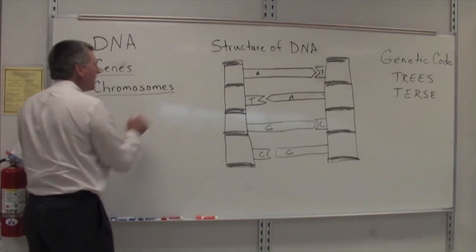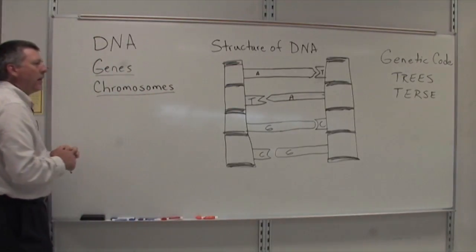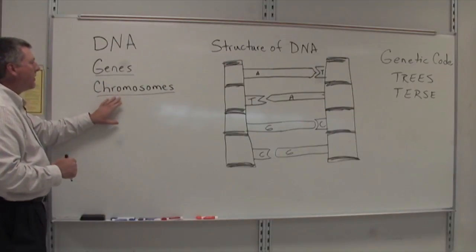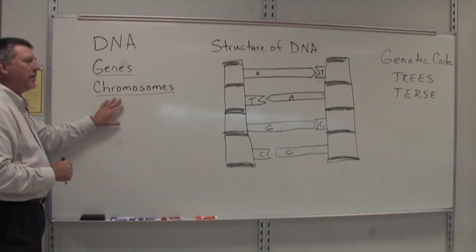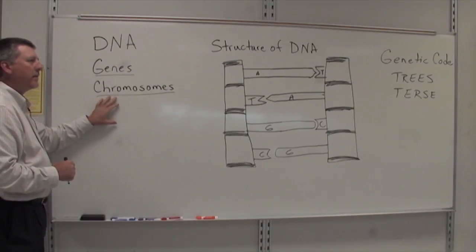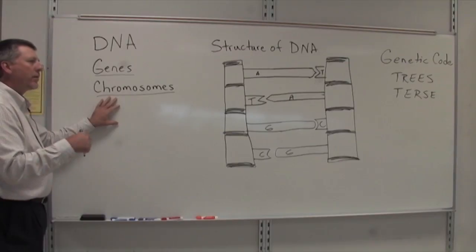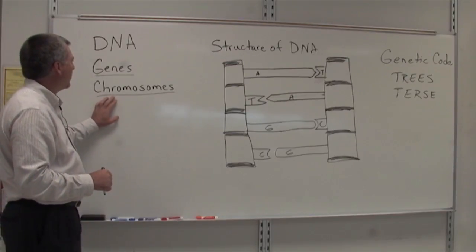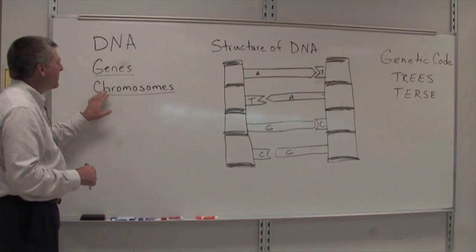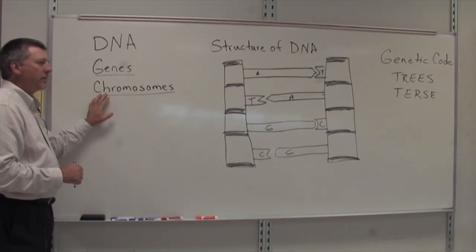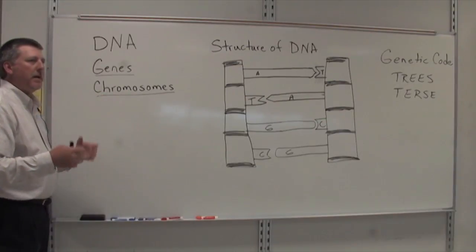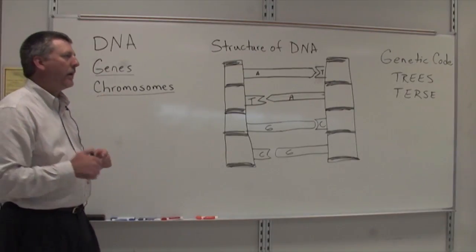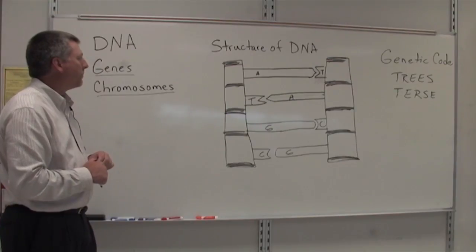DNA is arranged into long threads in eukaryotic cells and these long threads of DNA are called chromosomes. Genes are housed on chromosomes, and there may be many genes on one particular chromosome.